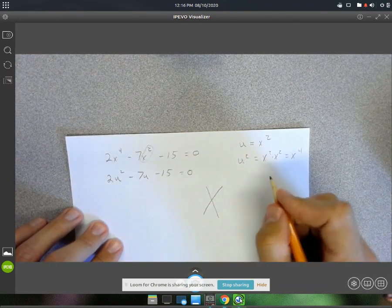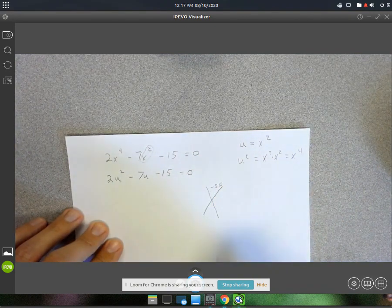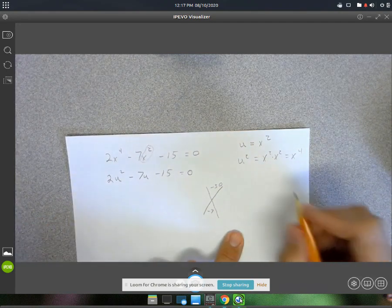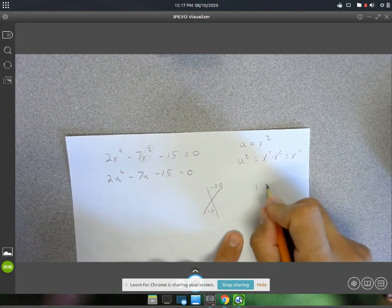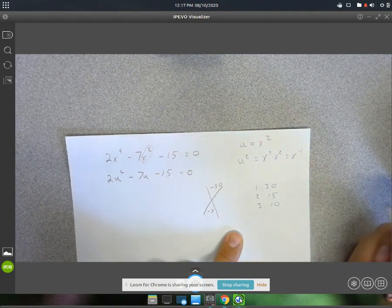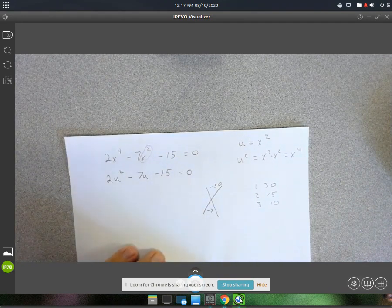Okay, so I've got 2 times negative 15 is negative 30. And they have to subtract to give me negative 7. Let's see here. 1 and 30, nope. 2 and 15, nope. 3 and 10, yes. 3 minus 10 gives us the negative 7.